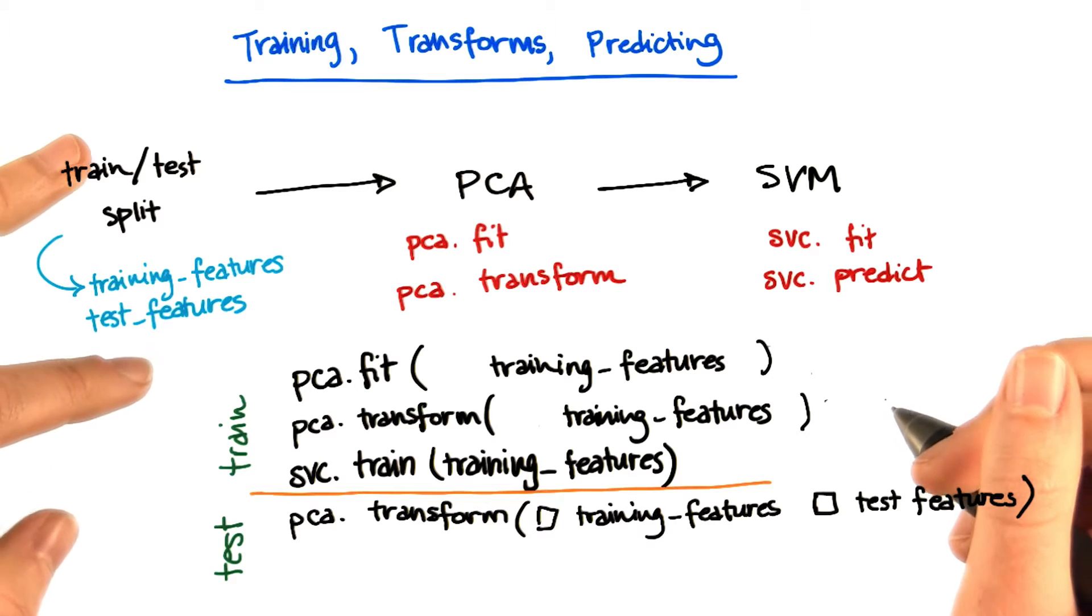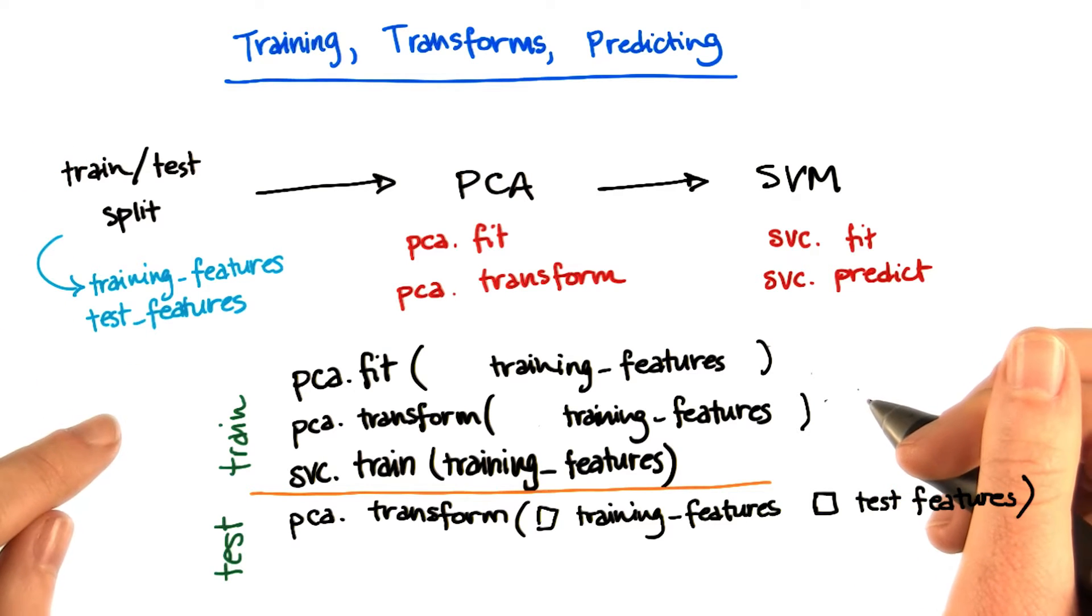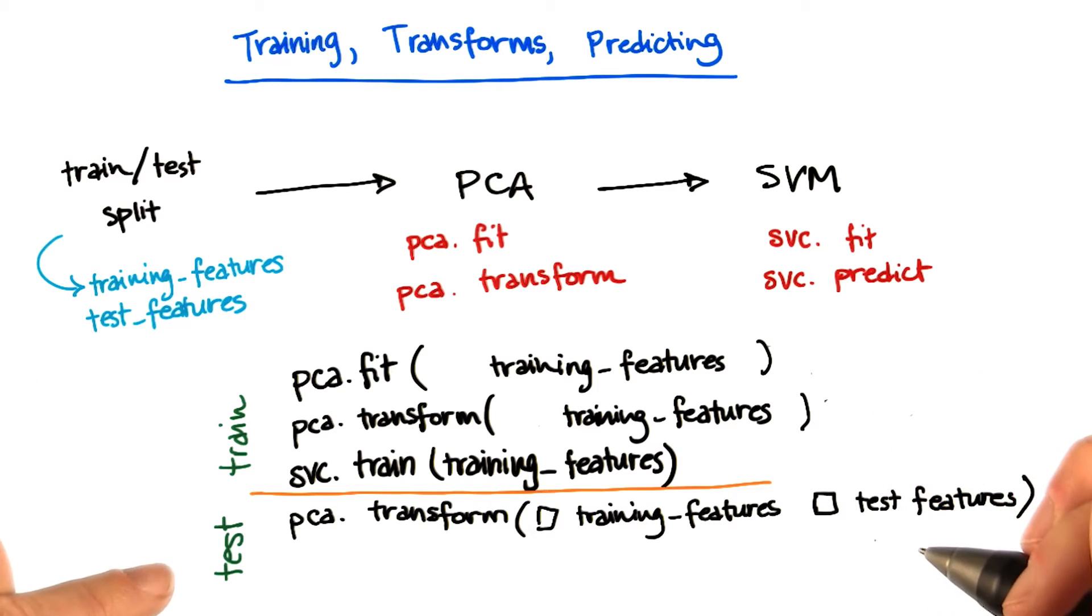In order to do that, I need to repeat what I did with my training features, this time with my testing features. And that means starting with a PCA transform.